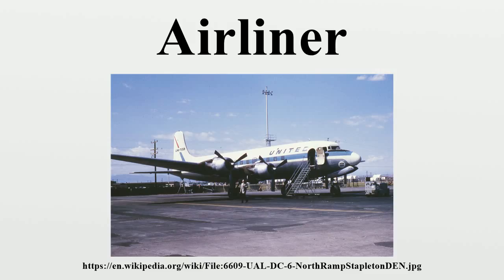The French also developed the Breguet 763 Deux-Ponts, which first flew in February 1949. This was a double-decker transport airliner used for both people and cargo — this four-engine airliner could hold large amounts of cargo or 97 passengers. After a long silence, France then created the Caravelle, the world's first short-to-mid-range jet airliner. Subsequent French efforts were part of the Airbus pan-European initiative.